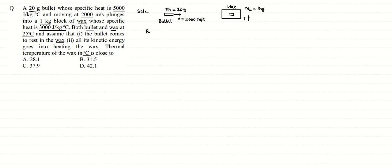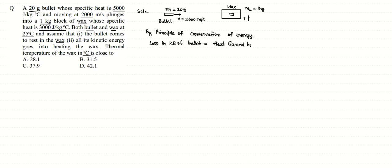By the principle of conservation of energy, the loss in kinetic energy of the bullet is equal to the heat gained by the bullet-wax system, as given in the question. The loss in kinetic energy equals half m v squared — the initial kinetic energy of the bullet. Since the bullet finally comes to rest, its velocity becomes zero, so the loss equals half mv squared, and this equals the heat gained by the bullet-wax system.